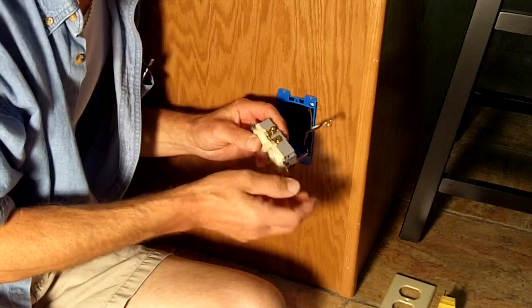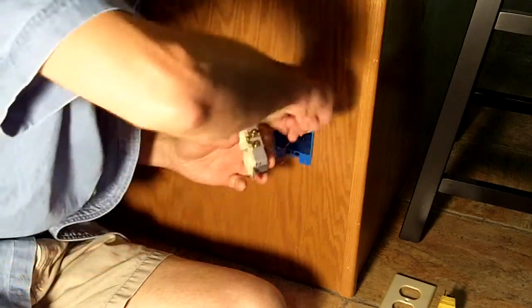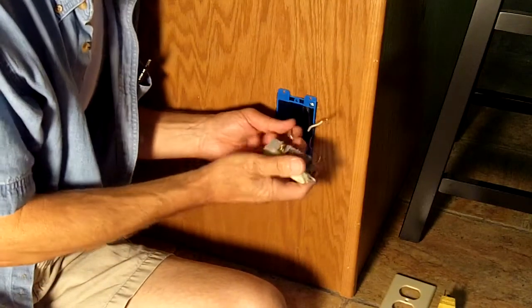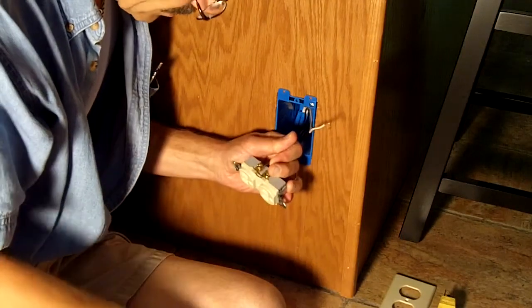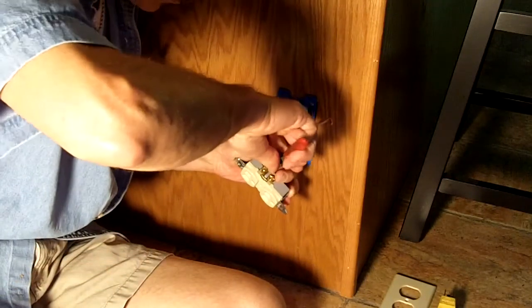There's the brass colored screw. The black wire goes on there. We can try to tighten that down a little bit.